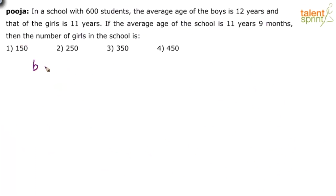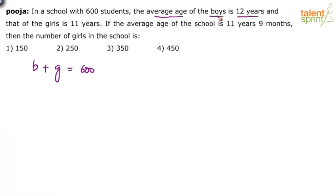Now a simple question. Let us assume the number of boys is B and the number of girls is G. The question says there is a school with 600 students, which means the total of boys and girls is 600. So number of boys plus number of girls is equal to 600. The average age of boys is 12 years and the average age of girls is 11 years.